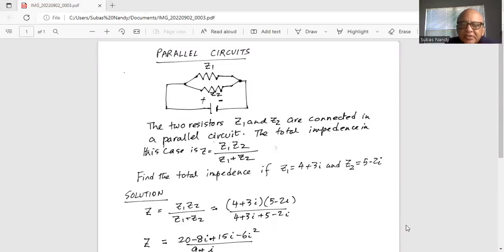Parallel circuits. The two resistors Z1 and Z2 are connected in a parallel circuit. The total impedance in this case is capital Z equal to Z1 times Z2 divided by Z1 plus Z2. Find the total impedance if Z1 is equal to 4 plus 3i and Z2 is equal to 5 minus 2i.